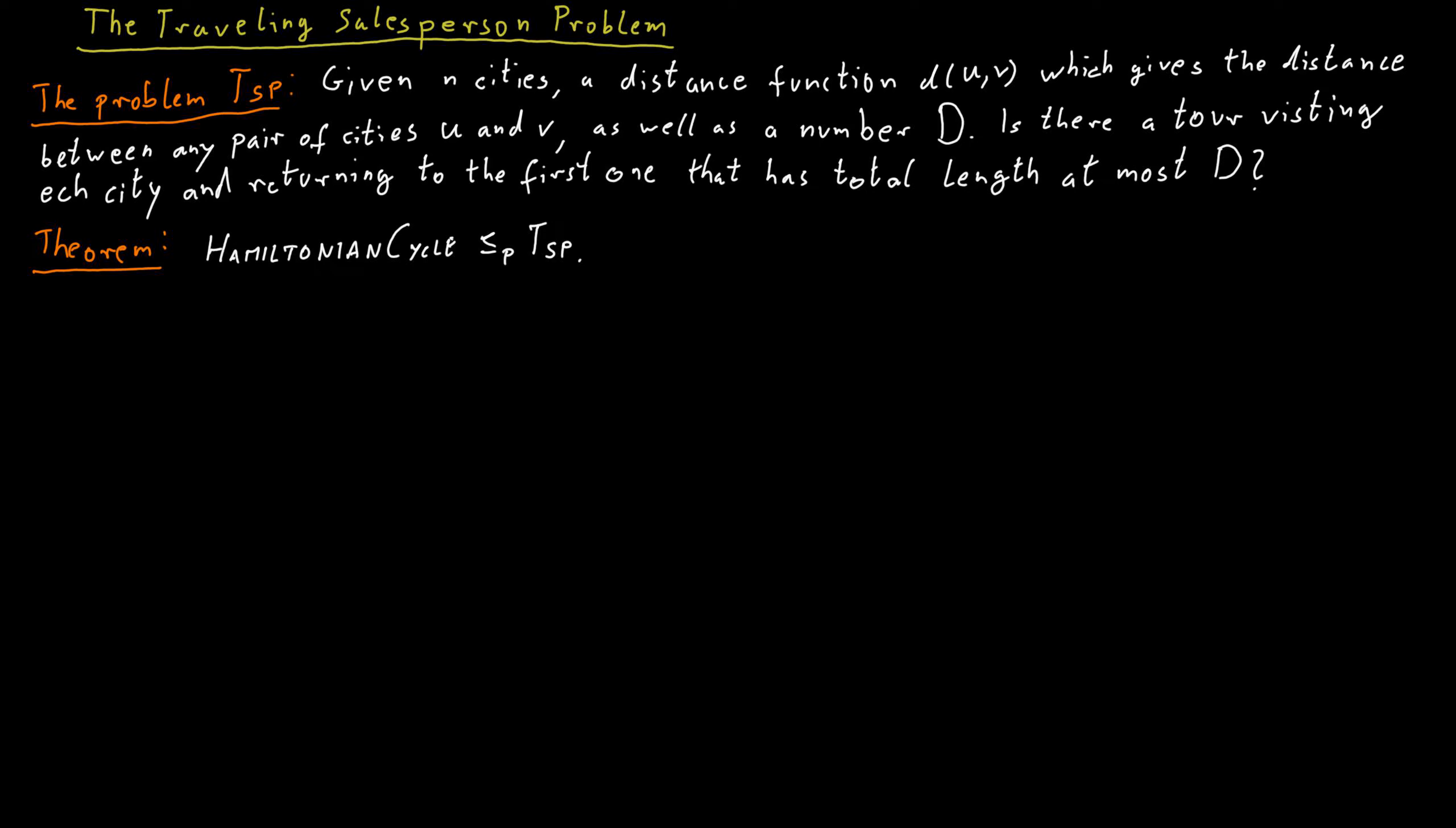So in TSP, we would have a complete weighted graph, whereas in Hamiltonian cycle, we just have a not necessarily complete unweighted graph. But at least both of those are graphs, so there's some hope to relate these two problems to one another.